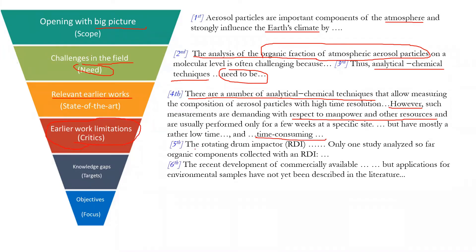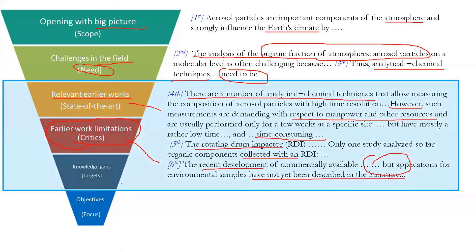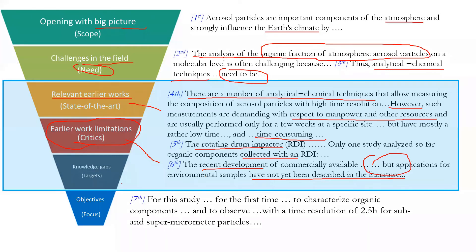Similarly, you find time-consuming issues. The rotating drum then is the only one collected. The recent development — you keep noting that — but there is a problem: it has 'not yet been described in literature.' So you have earlier limitations mentioned, earlier works mentioned, and you summarize this. Then there is a knowledge gap. These three elements can be mixed together. Then you narrow down: 'For this study, for the first time, to characterize the organic component, to observe something.' That tells you your objective. Remember, each sentence appears in the outline.